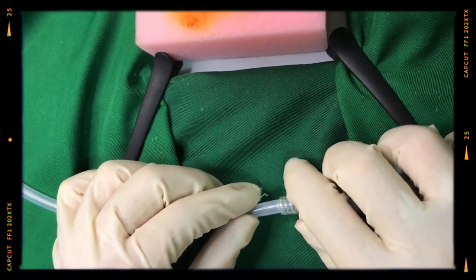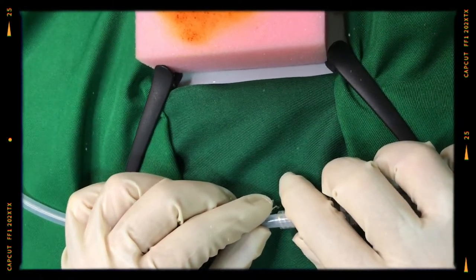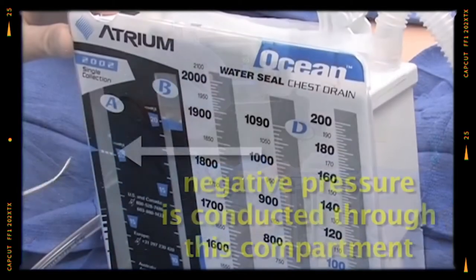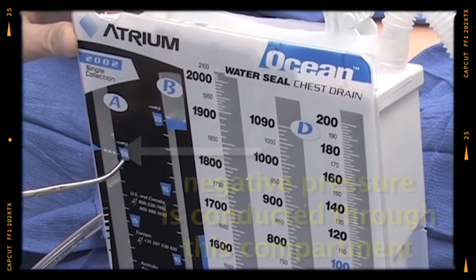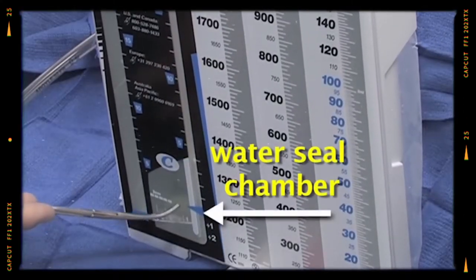Connect the tube to the underwater seal chest drainage system and remove the distal kelly clamp. Care should be taken to do this step properly as this may cause pneumothorax if the tube is disconnected from the underwater seal.